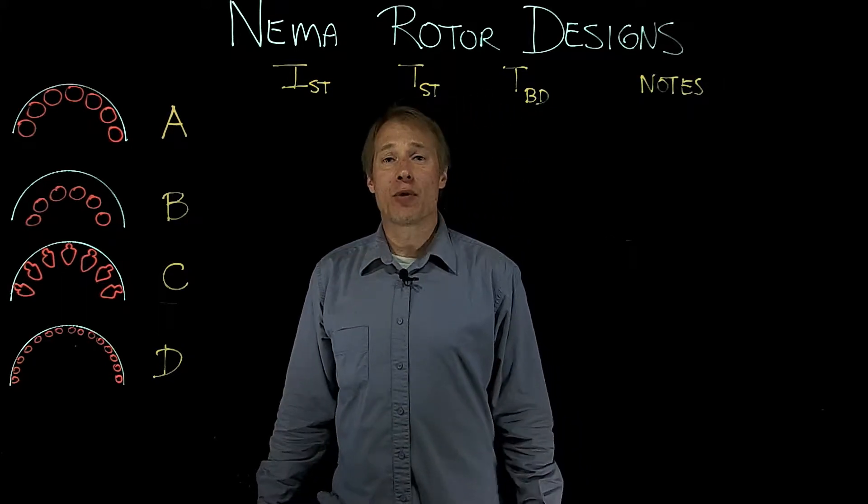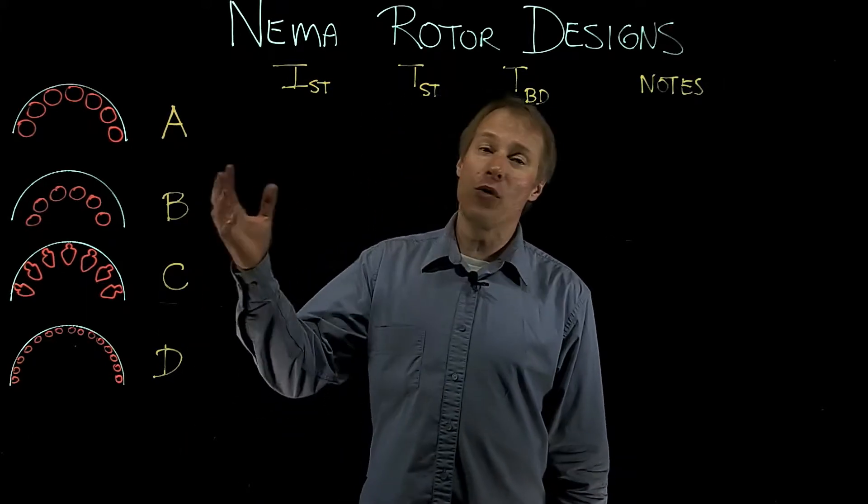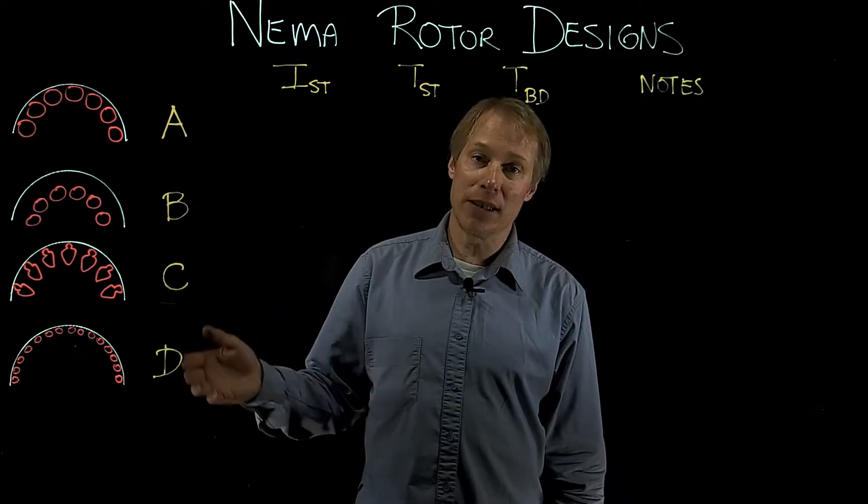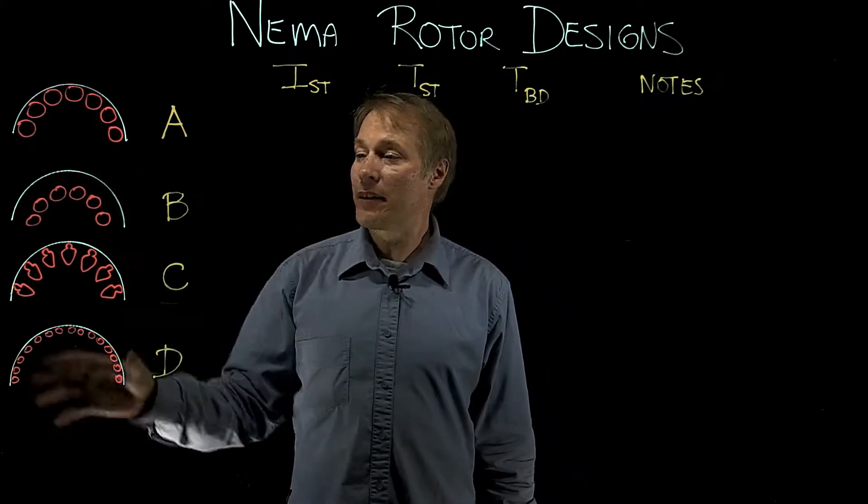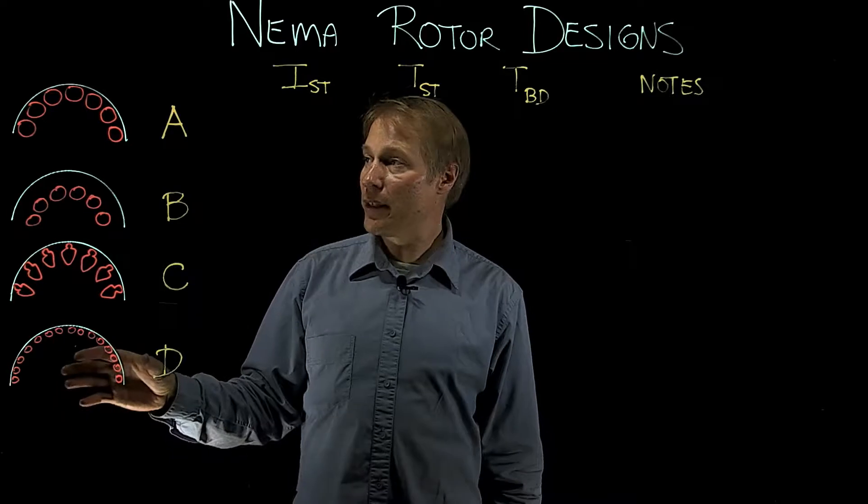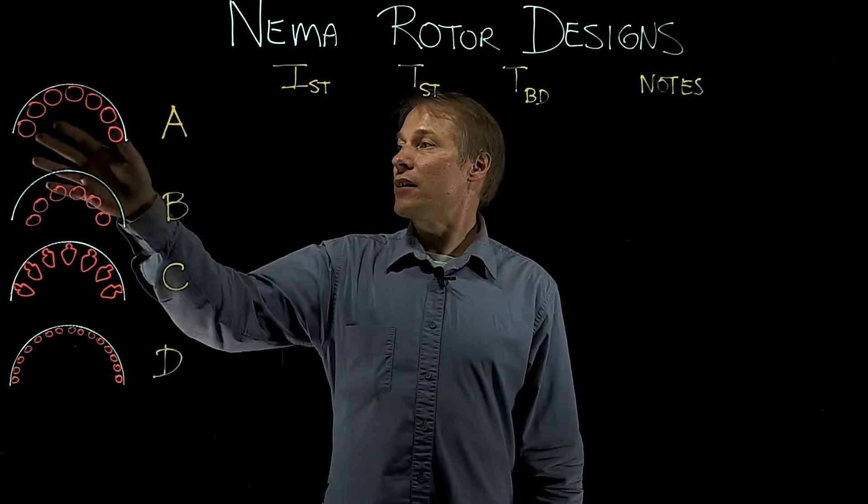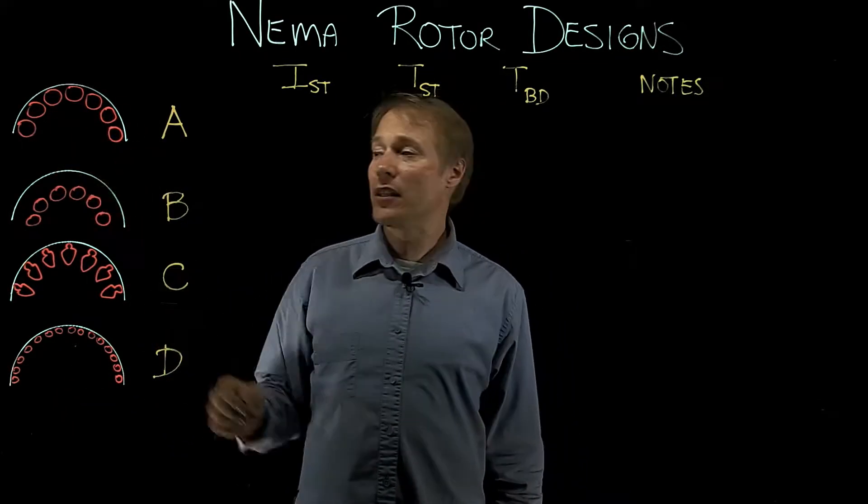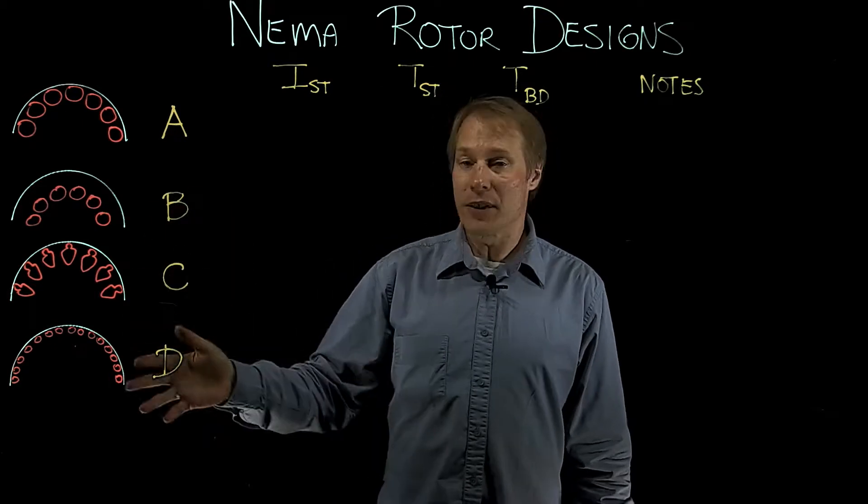Today's topic are NEMA rotor designs. So there are four NEMA rotors: the A, B, C, and D. And you can see I have the diagrams of the rotors drawn out here with the conductor bars, the cross-sectional area of the conductor bars, and the different designs of each.